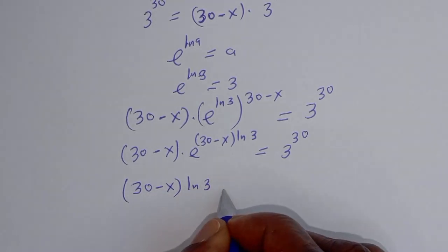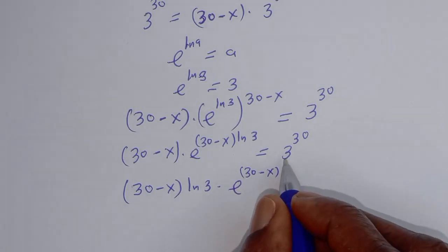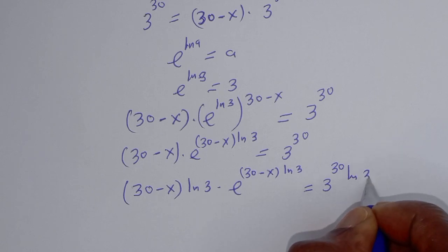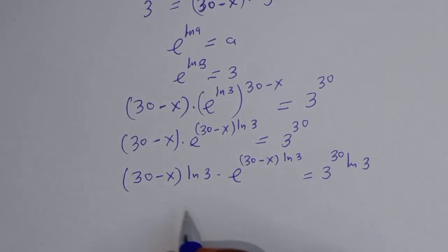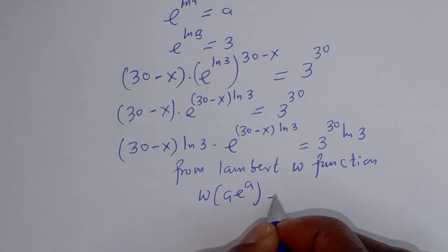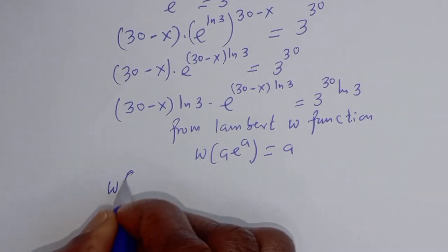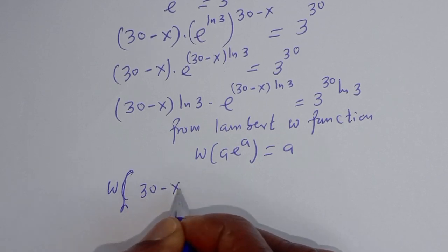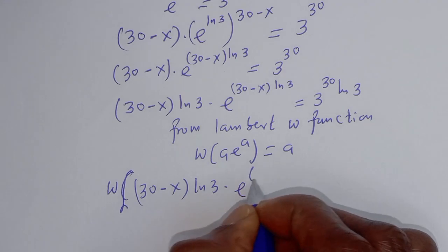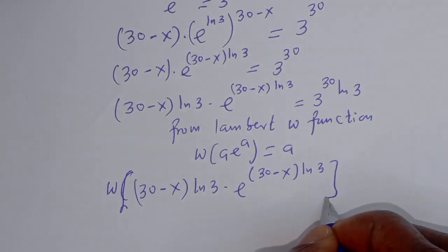So we have 30 minus s multiplied by e raised to power (30 minus s) times ln of 3, which is equal to 3 raised to power 30 times ln of 3. Now from the Lambert W function definition: W of a times e to the power of a is equal to a. Applying W to both sides.